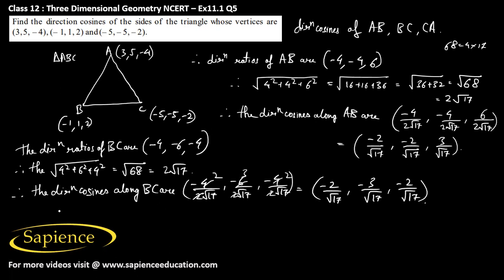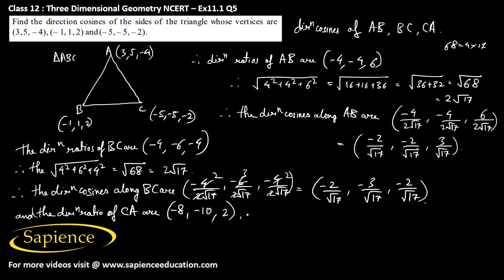Now we need to find the direction ratios of side CA. Those are: minus 5 minus 3, that is minus 8; minus 5 minus 5, that is minus 10; and minus 2 minus of minus 4, that is minus 2 plus 4, that is plus 2. Therefore, we need to find square root of 8 squared plus 10 squared plus 2 squared, that will be square root of 64 plus 100 plus 4, that is 168, so square root of 168.